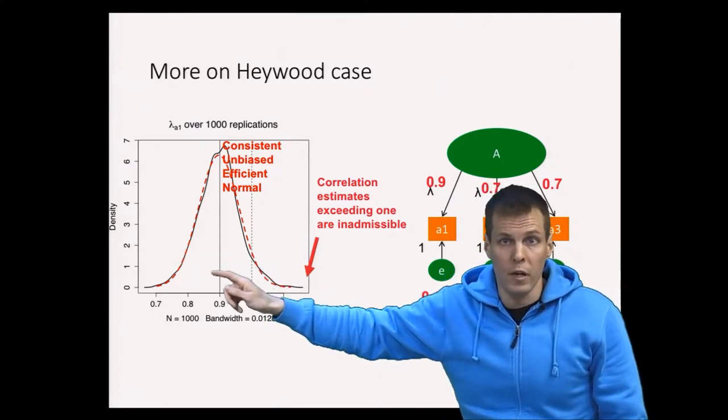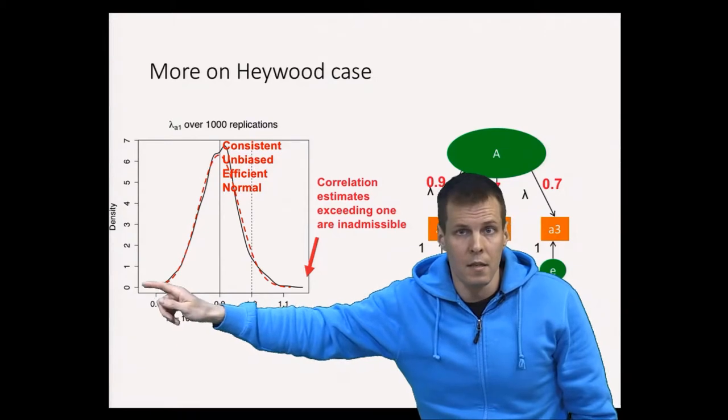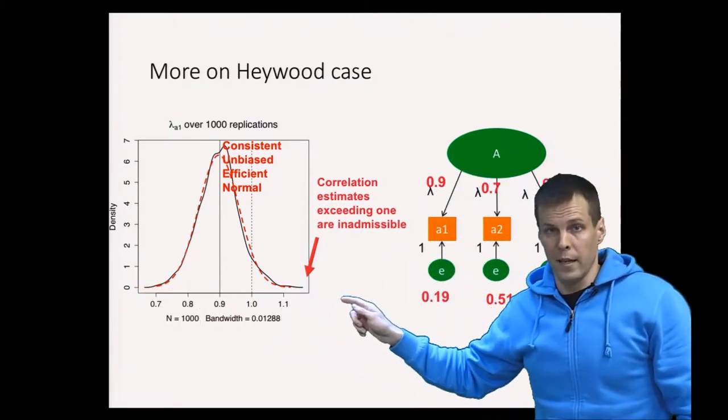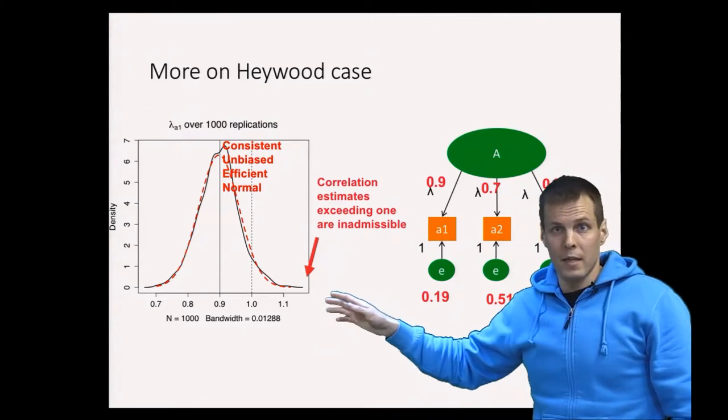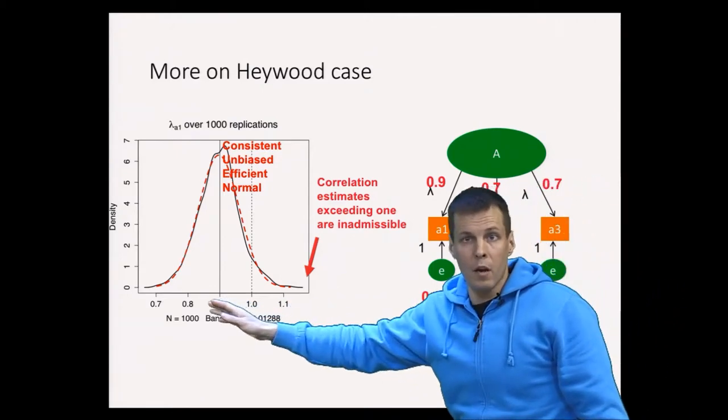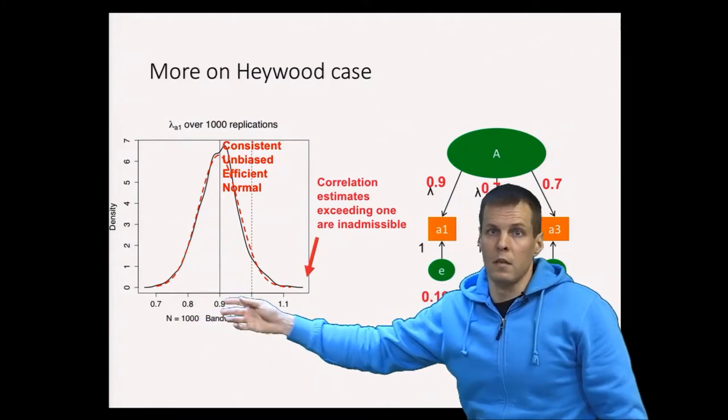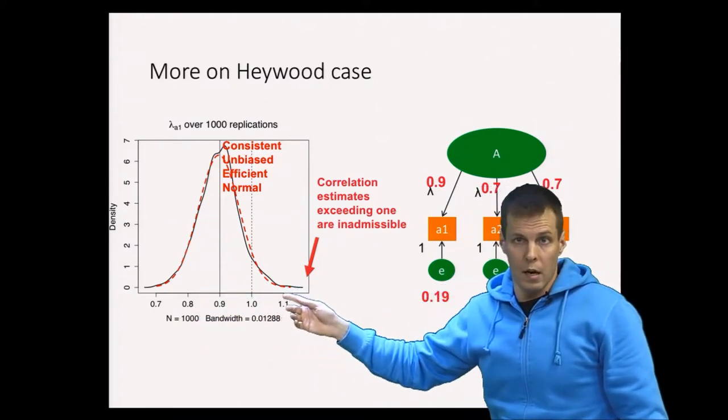If the estimates are also normally distributed then we have this negative tail here and we also have this positive tail here and we can see that if we have some estimates that are below 0.8 then because of unbiasedness and normality some estimates go above one.